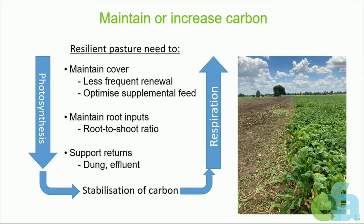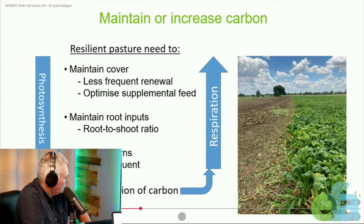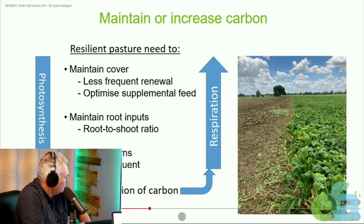These are the key messages: if we're thinking about resilient pastures, maintain cover, continuous inputs of carbon into soil — which may mean we need pastures that require less renewal. We may need to think about optimizing the supplemental feeds we use because they go through renewal periods as well. One of the key things is the role of roots: we need to maintain roots and root inputs into soil, and make sure we are getting dung returns back to the paddocks.